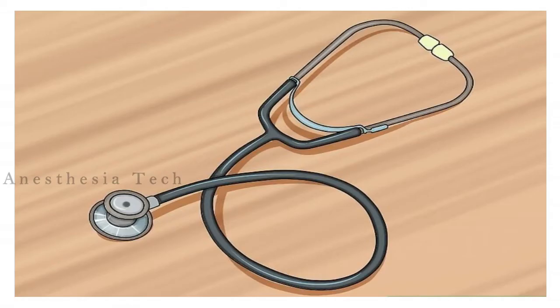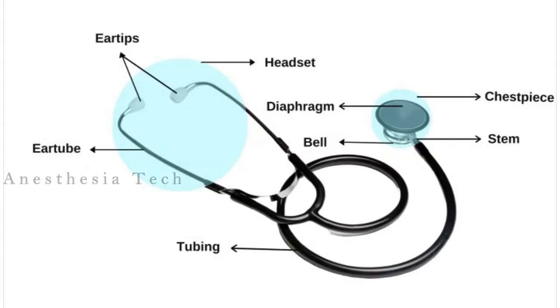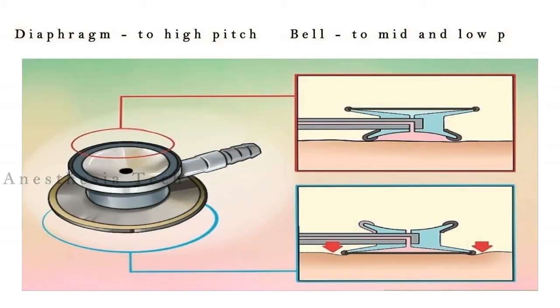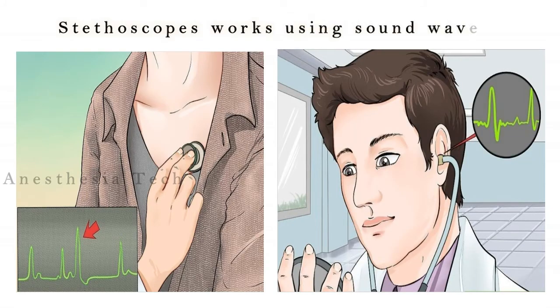Have a look at the stethoscope. Now I'm going to list the parts of the stethoscope. The diaphragm is used to listen to high-pitched sounds, and the bell is used to listen to mid and low-pitched sounds. Stethoscopes work using sound waves — a stethoscope is used to transmit sound waves from a patient's body to the doctor's ears.